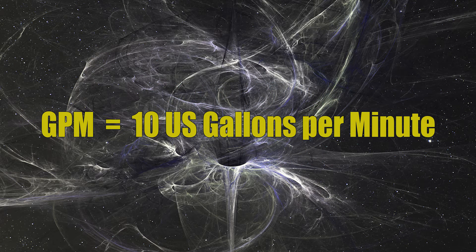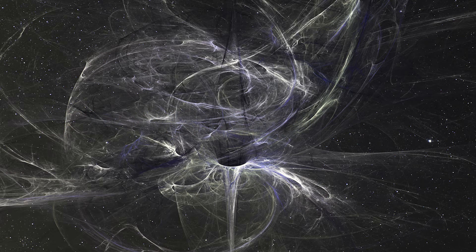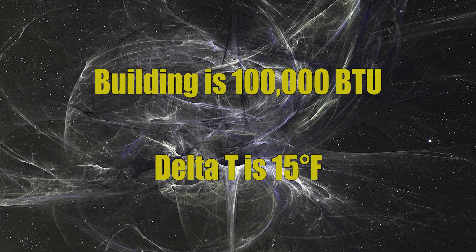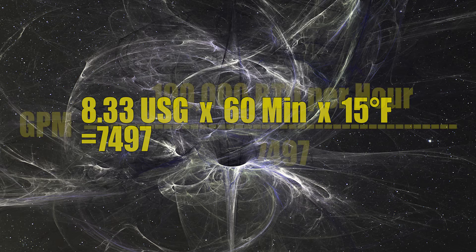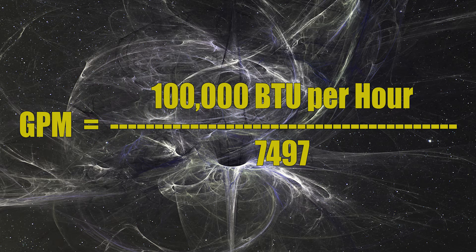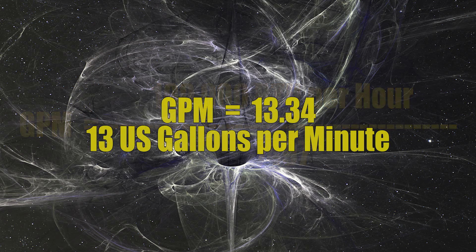But say I don't want to use a delta T of 20 — say I want to use a more common one like a delta T of 15 degrees Fahrenheit. I'll do the same math: 8.33 times 60 times 15 equals 7,497. Then I take my BTU load of 100,000 divided by 7,497, and that equals 13.34 GPM — you can safely round that off to 13.